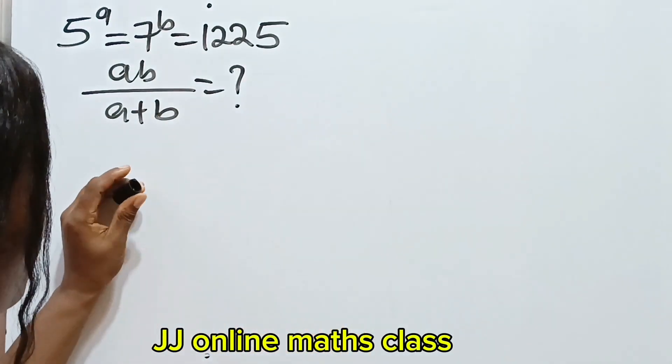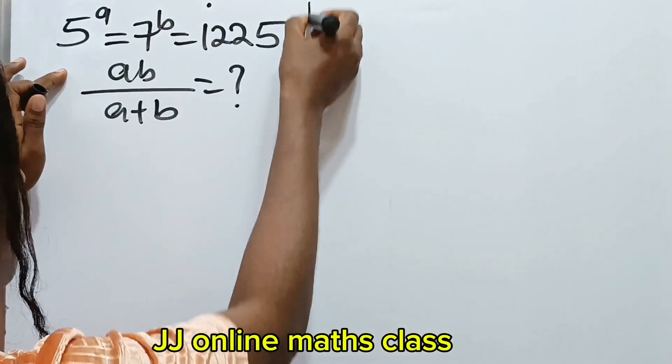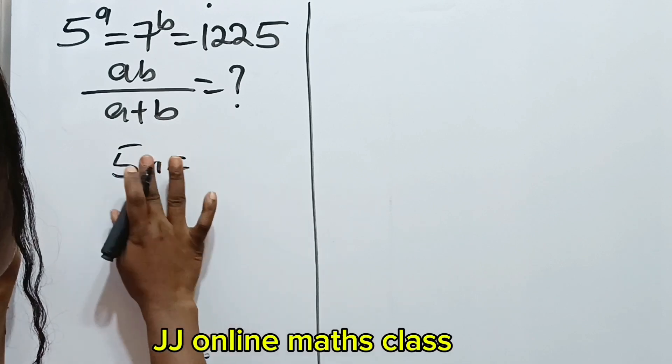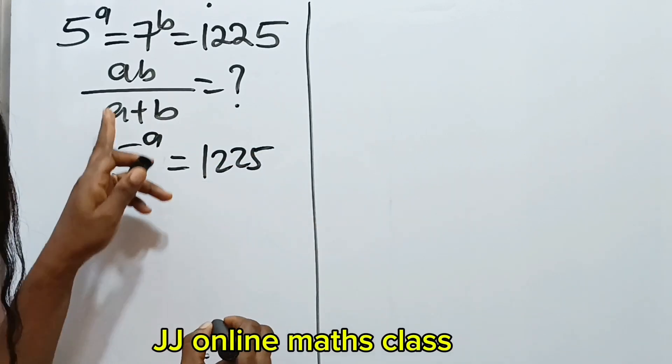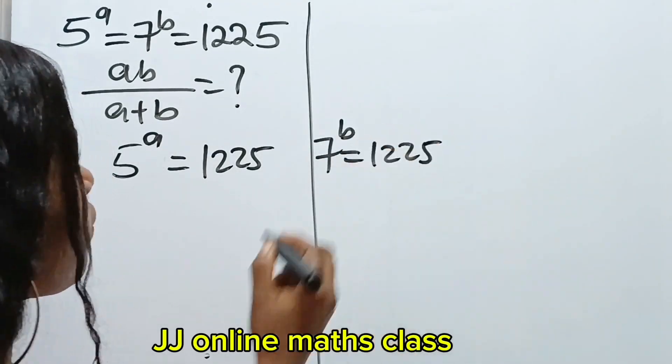Okay, it's very interesting. Now, this is how we go about it. We are going to equate. We have two equations here, right? The first one is that 5 to the power of a is equal to 1225. Now, the second one is that 7 to the power of b is equal to 1225.